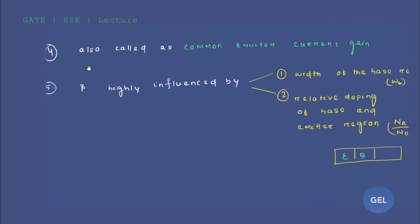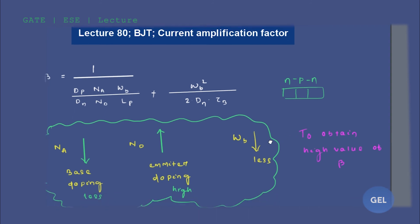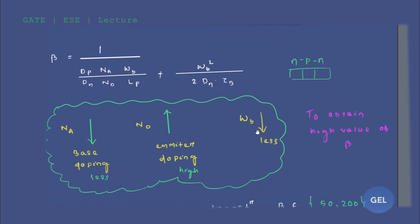Also remember, beta is called the common emitter current gain, also known as the current amplification factor. Beta is always highly influenced by the width of the base region — the base width is one of the most important factors that influences the beta value.